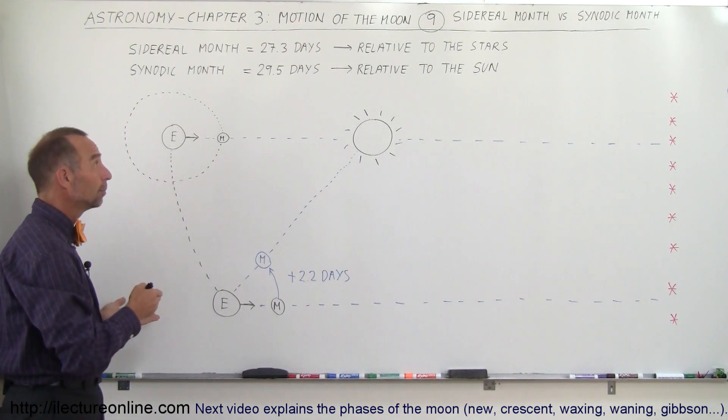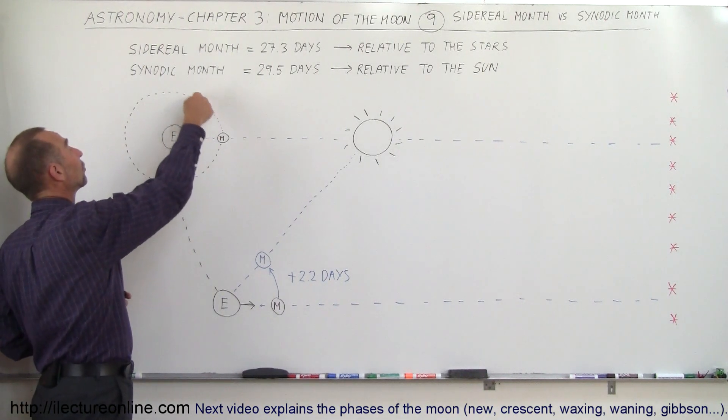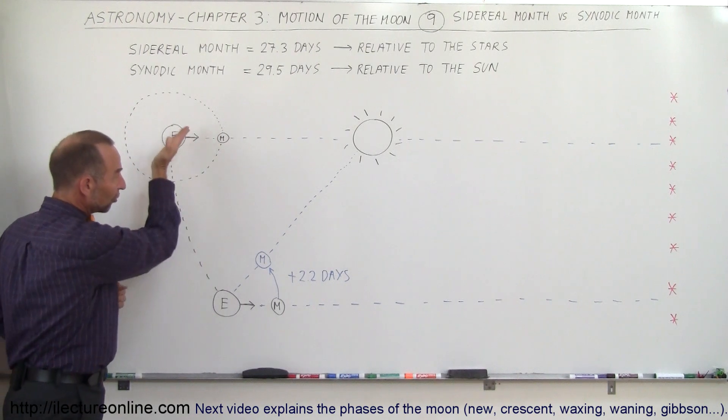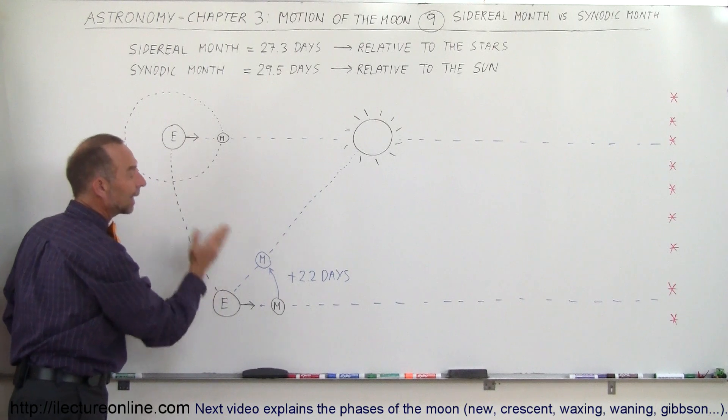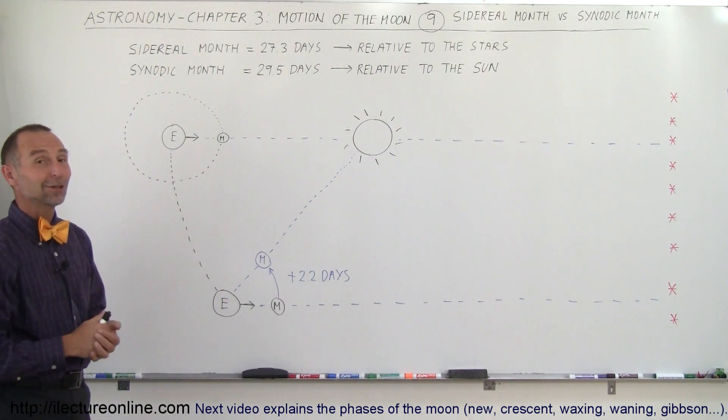So that's the difference between a synodic month and a sidereal month. A sidereal month is only the time that it takes for the moon to take a trip around the earth, 360 degrees, but notice as the earth moves, it needs to travel an additional 2.2 days to be back in line, and that 29.5 day period is called the synodic month, and now you know the difference.